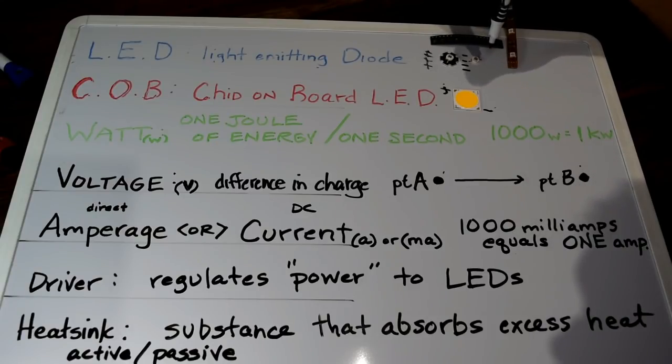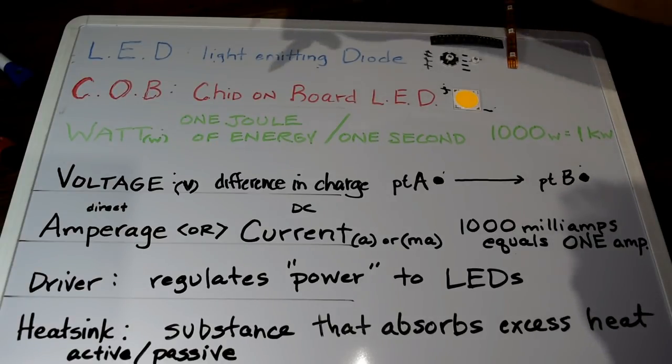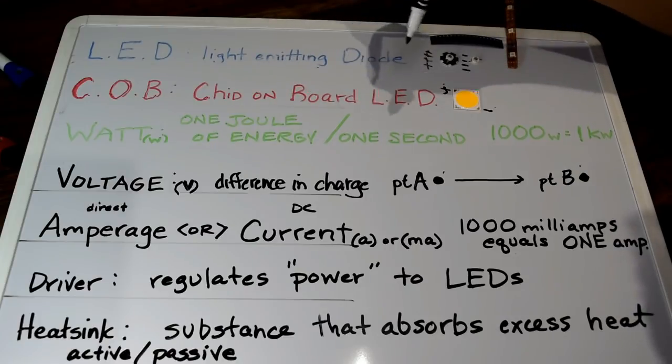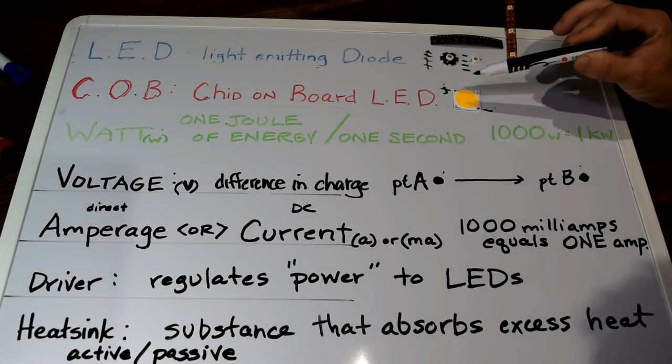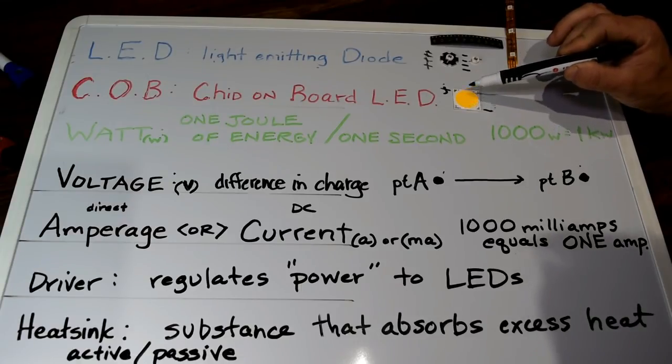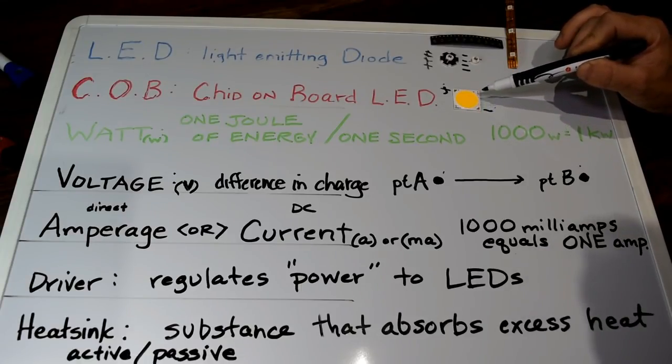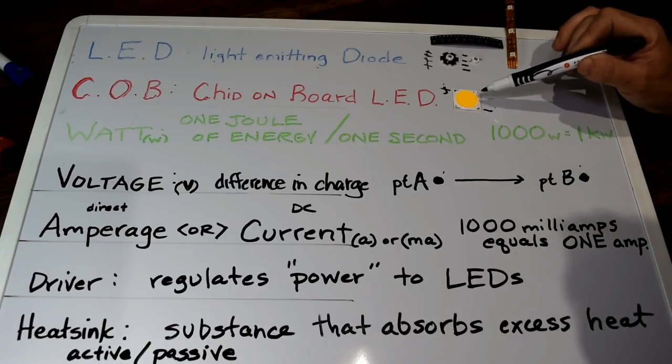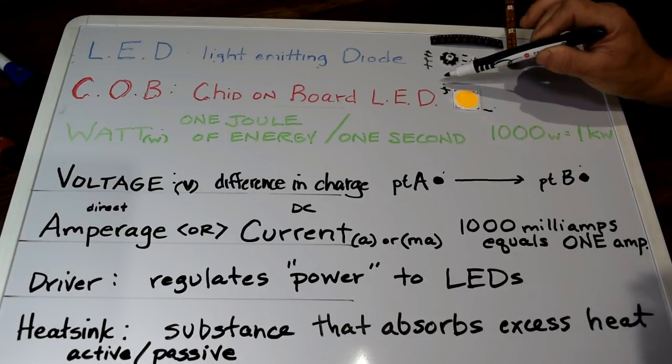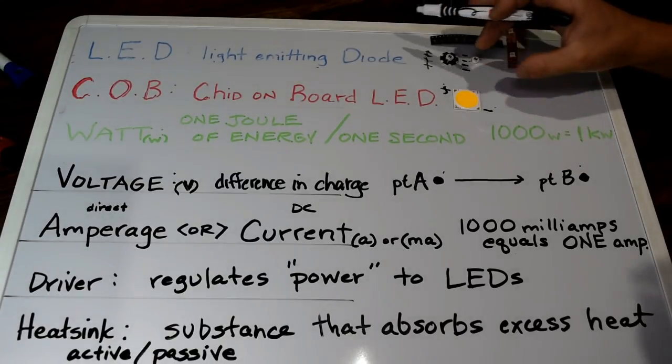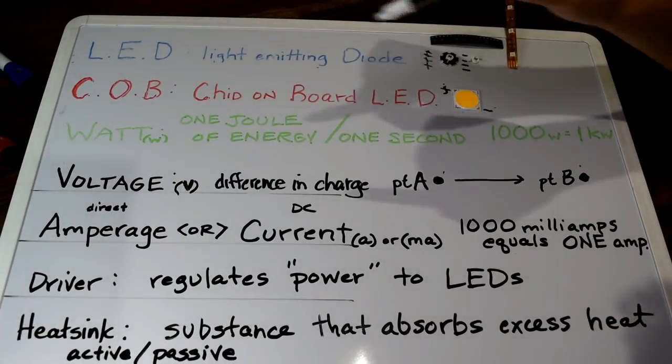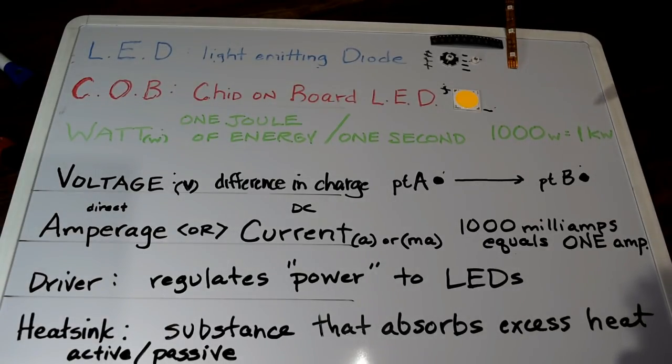LED stands for light emitting diode. It has some positive stuff on one side and some negative stuff on the other, and when you put electricity through it, it makes light. COB stands for chip on board LED. It's a hundred or sometimes 150 little bitty LEDs integrated onto a ceramic or copper circuit board that are all wired together so they have one common positive and one common negative. It does all the work for you and just gives you this one chip.